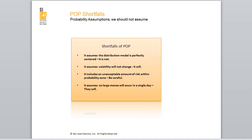Let's look at the shortfalls of traditional POP calculation. It assumes the distribution model is perfectly centered — and it is not. It assumes volatility will not change — and we know that it will. It includes an unacceptable amount of risk within the probability zone.